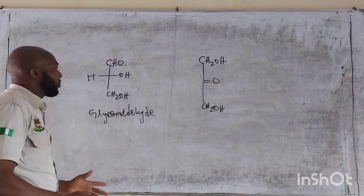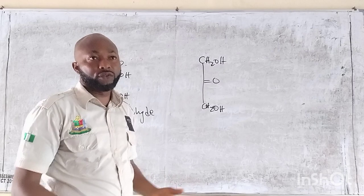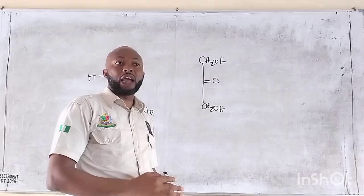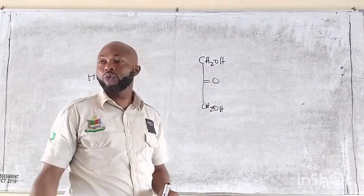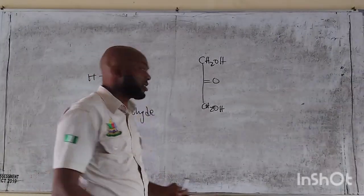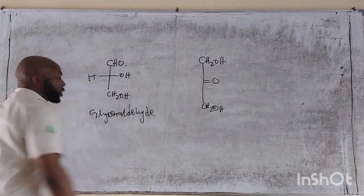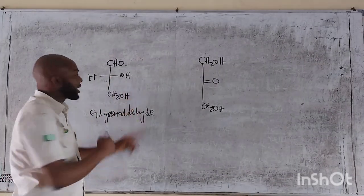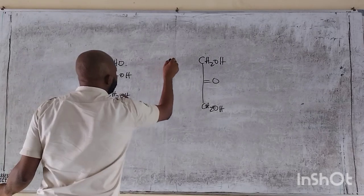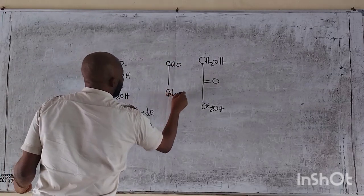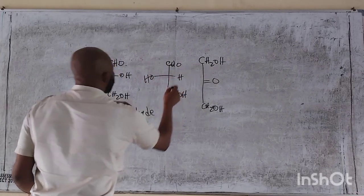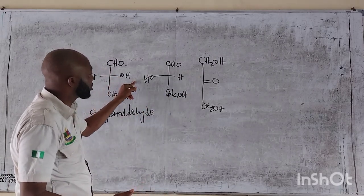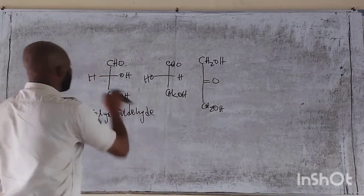We are going to talk about the D compounds. When we say a compound has a D — for example we have the hexoses like fructose, D-fructose, D-glucose and all that. So we will be able to define what actually makes it a D. This compound is glyceraldehyde. This is D-glyceraldehyde. Why? Because the OH group is at the right side. If it is the other way, this is the L-glyceraldehyde. The D is because the OH is at the right.